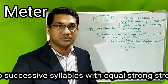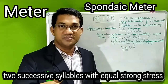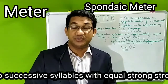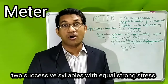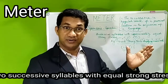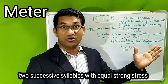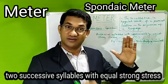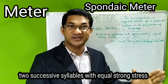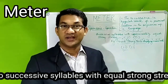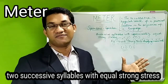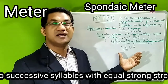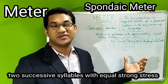Another very good example is from Hopkins' poem The Windhover: 'Dappled, dawn, drawn, falcon.' All four words — dappled, dawn, drawn, falcon — carry strong stress one after the other. This kind of occurrence of successive heavily stressed syllables is what is known as spondaic meter.